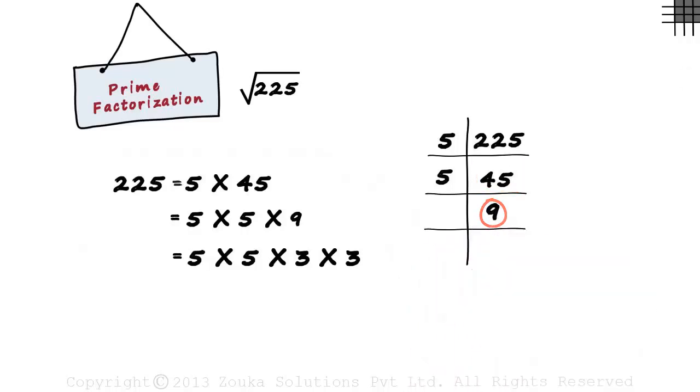9 is not prime and we can say that 3 multiplied by 3 equals 9. That's where we stop. When we get a prime factor here.